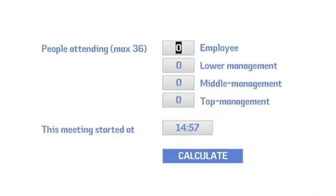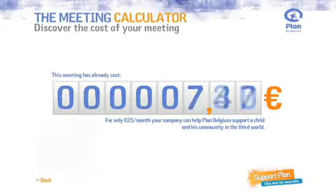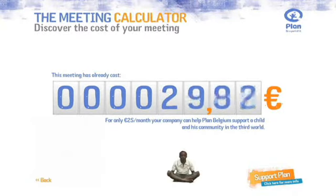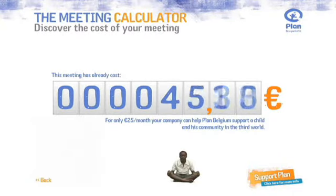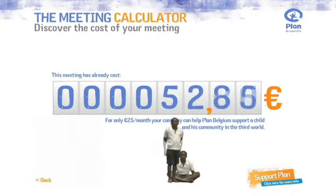Just enter the number of people attending and their function, and you'll notice it won't take more than a few minutes for the counter to reach €25 — the exact amount of money needed to help one child for a month.